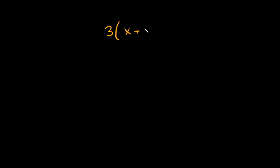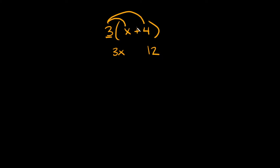If you remember how the distributive property works, you'll normally have something inside a set of parentheses and something sitting outside. In order to distribute, you take whatever's out here and multiply it by the inside — multiply it by the first term and then by the second term. So multiplying these first terms, 3 times x equals 3x, and then 3 times 4 equals 12. Since you're adding, you just bring that straight down. So your answer, if you were distributing, would be 3x plus 12.